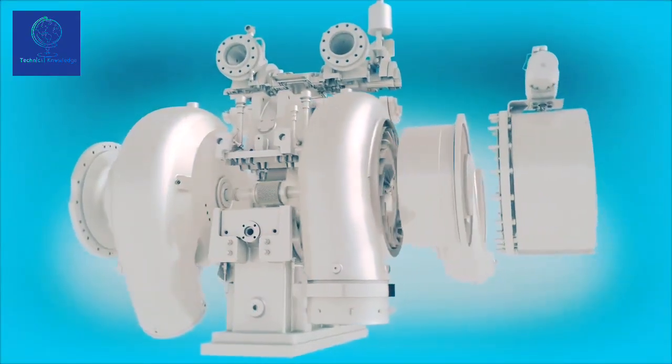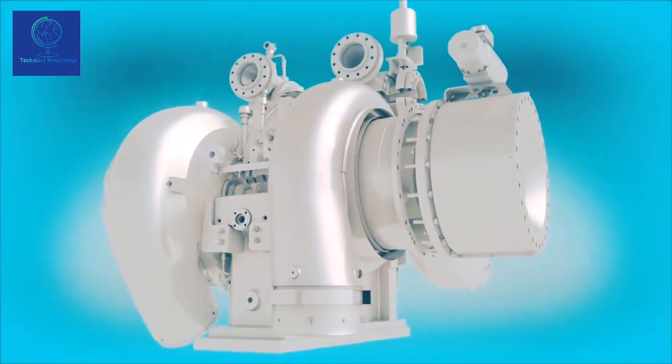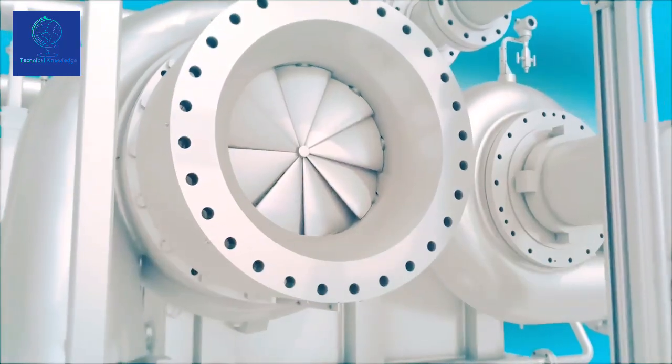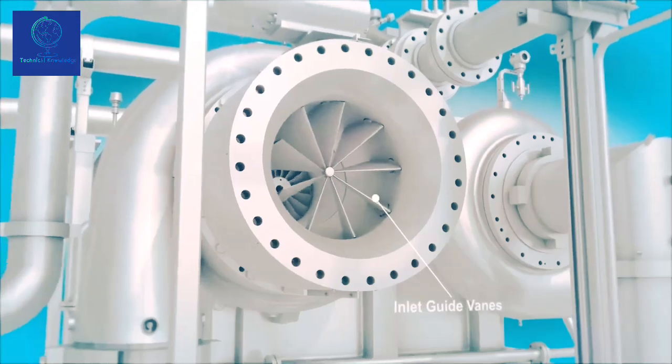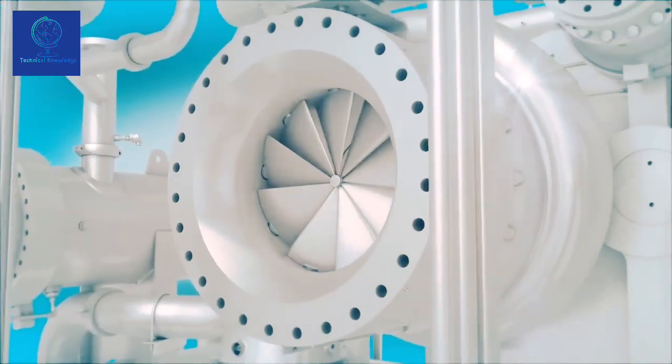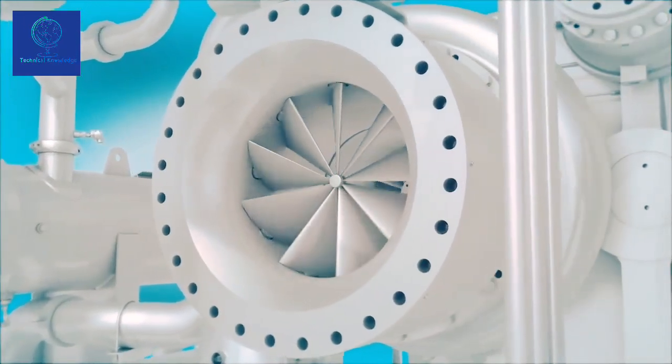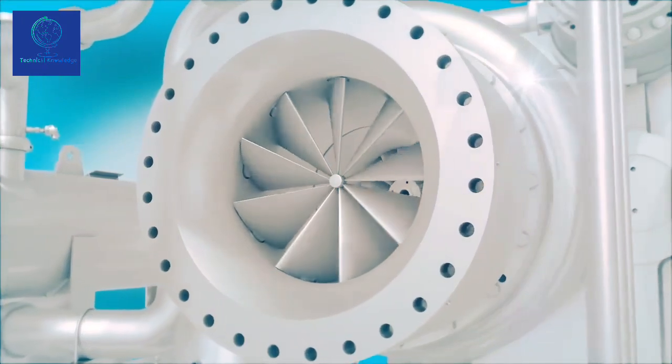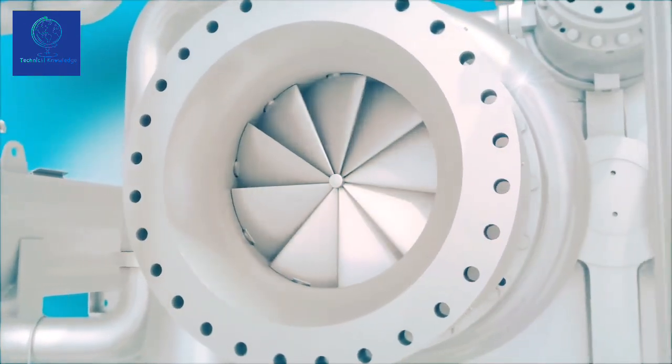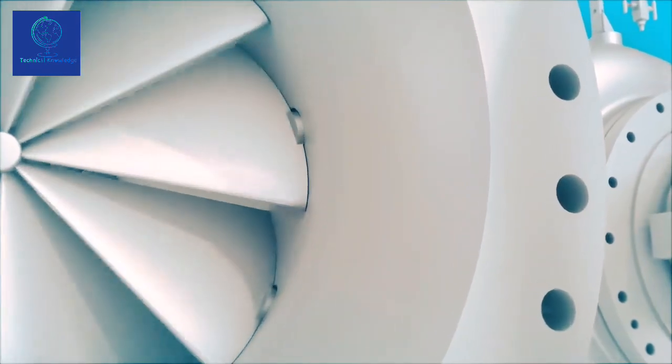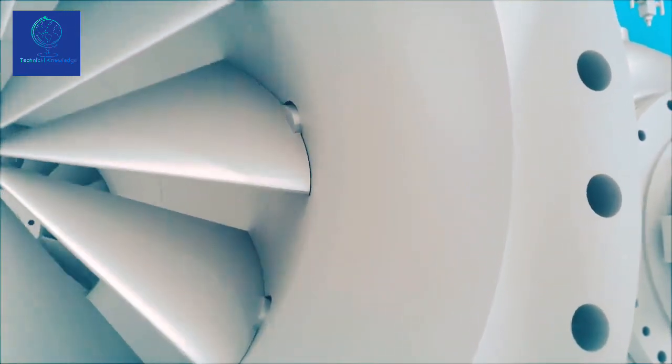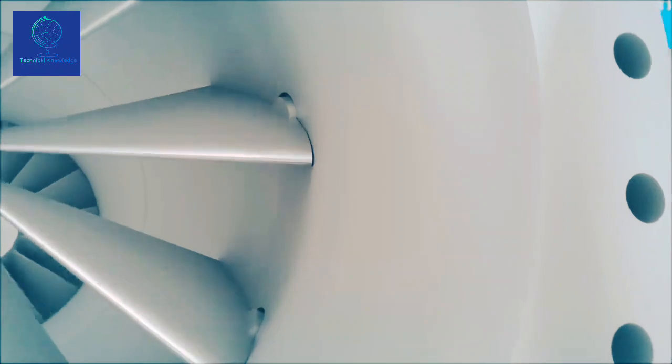The compression process begins with gas entering through adjustable inlet guide vanes, or IGVs, which are standard on all Atlas Copco compressors. IGVs control how much flow is sent into the machine, providing accurate process control. With IGVs, compressor efficiency can be increased by around 9% versus other inlet assemblies.